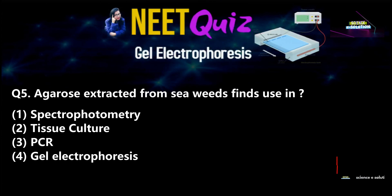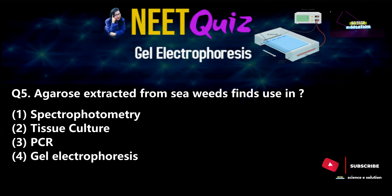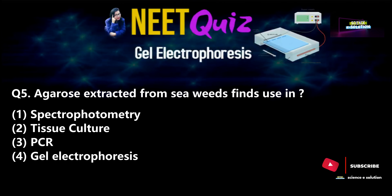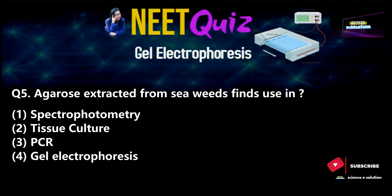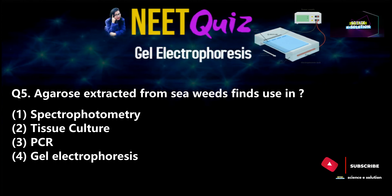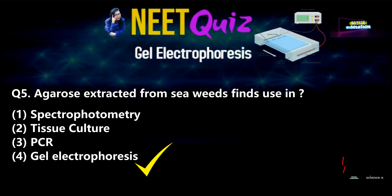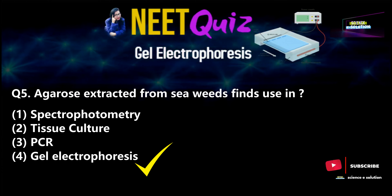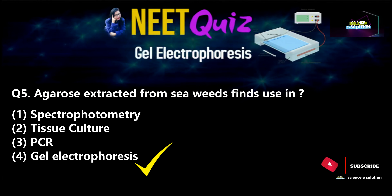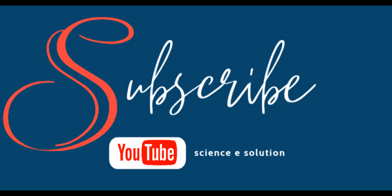Fifth question, which was asked in 2011: Agarose extracted from seaweeds finds use in — Options: spectrophotometry, tissue culture, PCR, or gel electrophoresis. The agarose extract from seaweeds is used in gel electrophoresis, and that is why it is also known as agarose gel electrophoresis. Option number four is the correct answer.